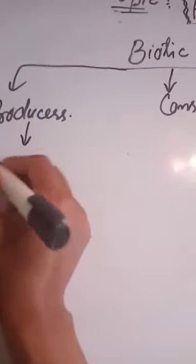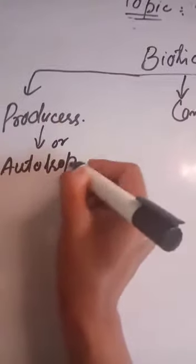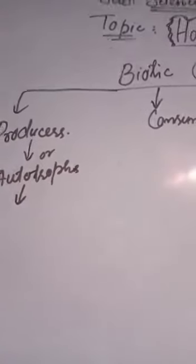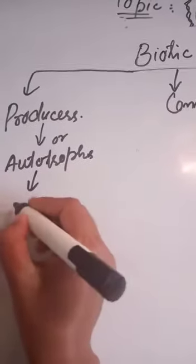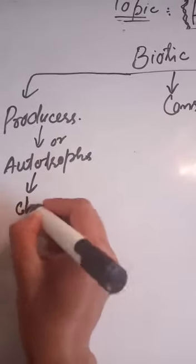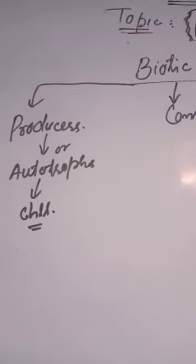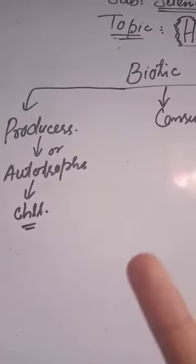Producers, these are also called autotrophs. These are those organisms which prepare their own food because of a green pigment which is called chlorophyll. This chlorophyll helps in the preparation of food.